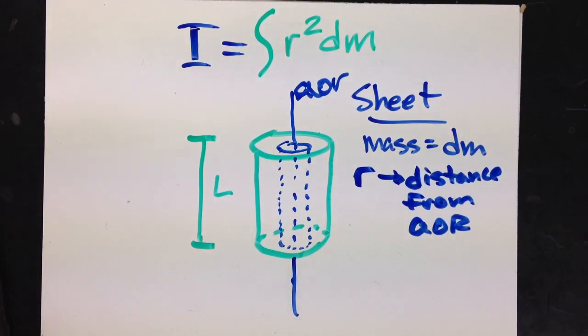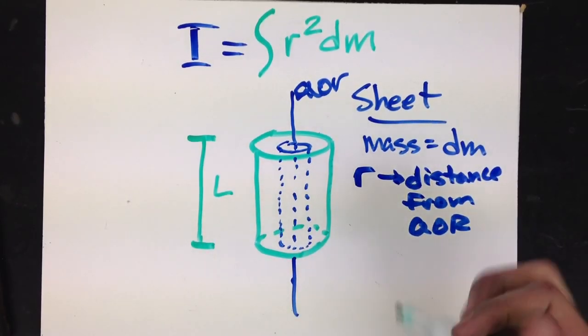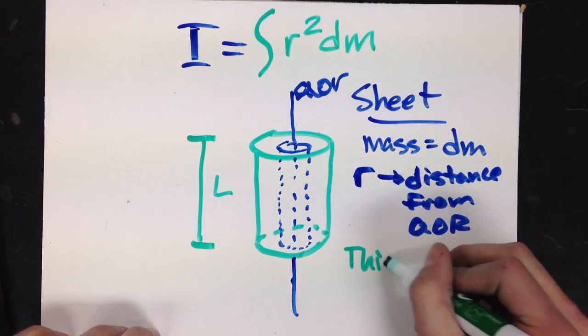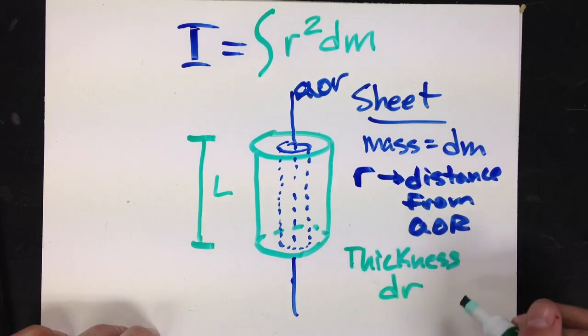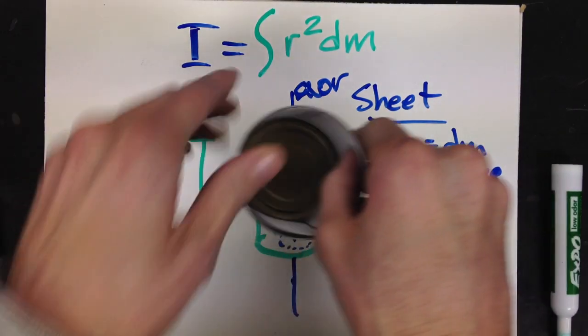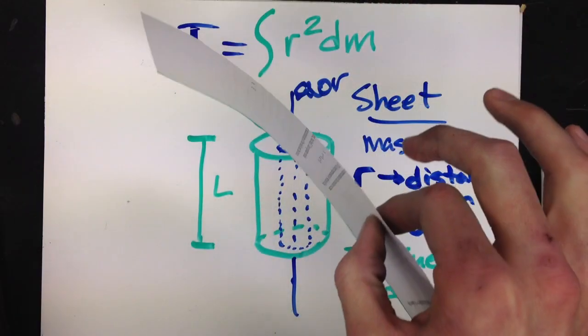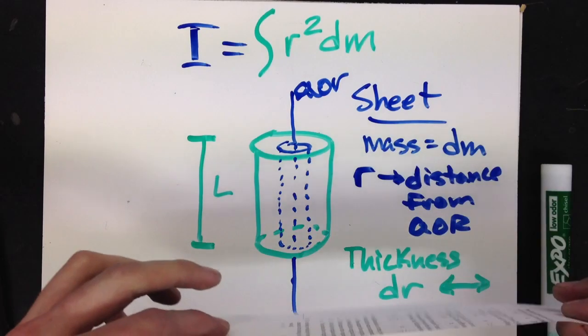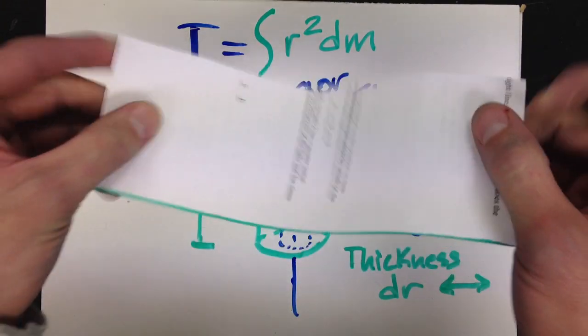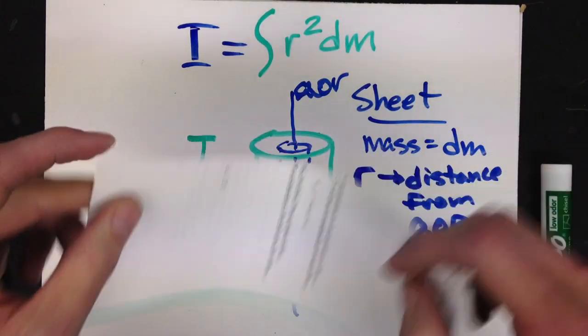Now, let's say that the sheet also has a thickness dr. So if I were to actually just pull this sheet out of the cylinder, the width of the paper is dr. So it's a very small, infinitesimally small sheet.